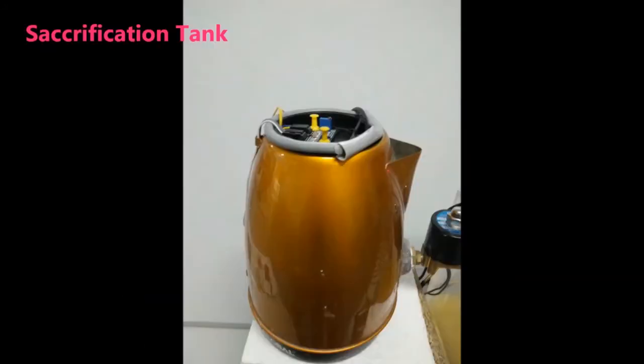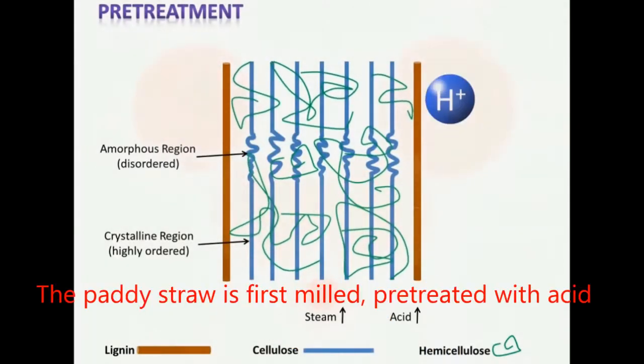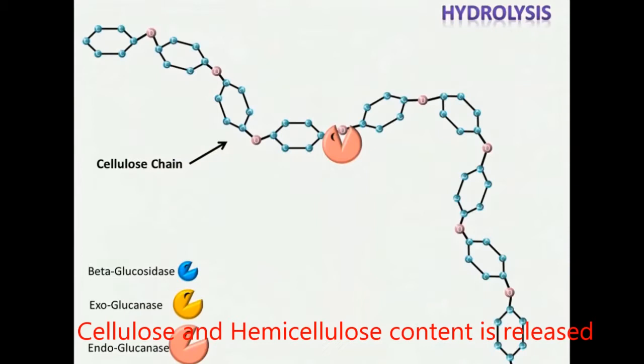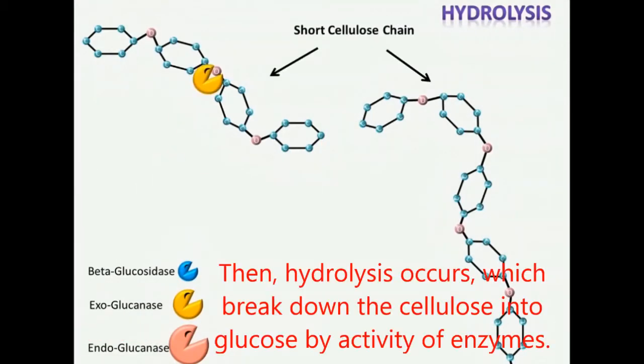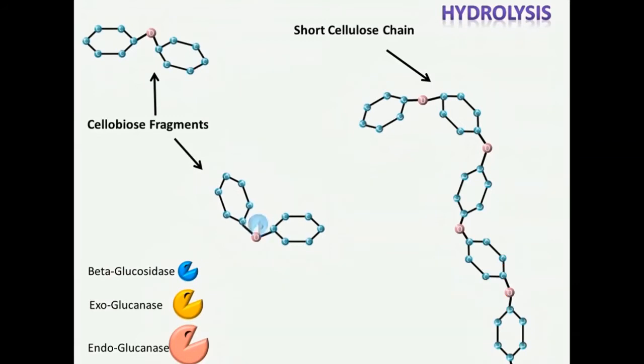The system starts at the Saccharification Tank. The paddy straw is first milled, pre-treated with acid to break the cellulose and lignin to release the cellulose and hemicellulose content. Then hydrolysis occurs, which breaks down the cellulose into glucose by enzyme activity. The whole process is called Saccharification.